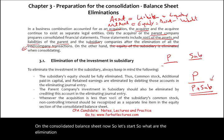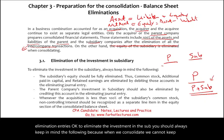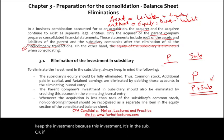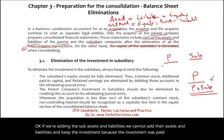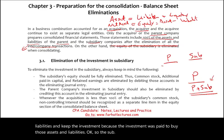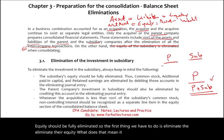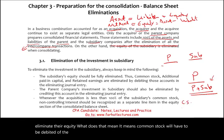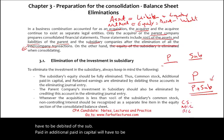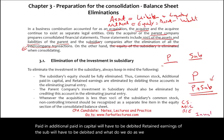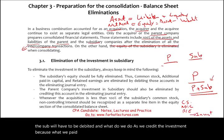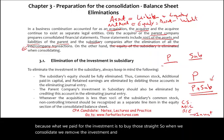To eliminate the investment in the subsidiary, keep in mind: when we consolidate, we cannot keep the investment account, because it was paid to buy the sub's assets and liabilities. The sub equity should be fully eliminated. We debit common stock, debit additional paid-in capital, and debit retained earnings of the sub — and we credit the investment account. That's what we paid for, so when we consolidate, we remove the investment and remove those three equity accounts.